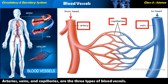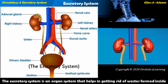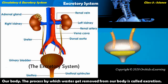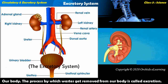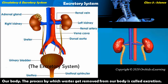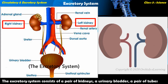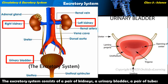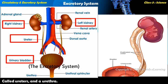The excretory system is an organ system that helps in getting rid of wastes formed inside our body. The process by which wastes get removed from our body is called excretion. The excretory system consists of a pair of kidneys, a urinary bladder, a pair of tubes called ureters, and a urethra.